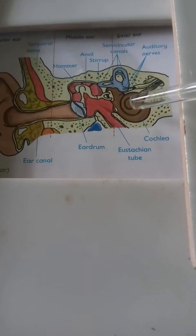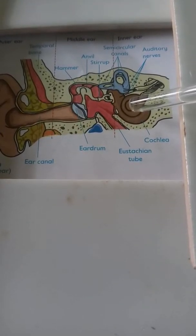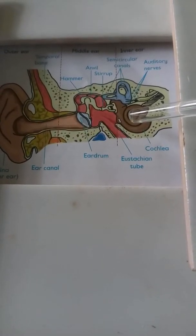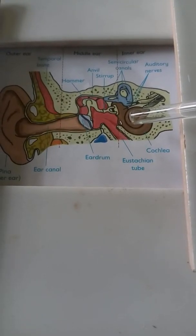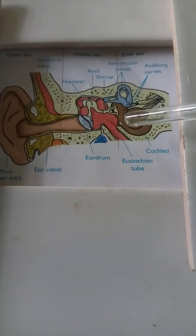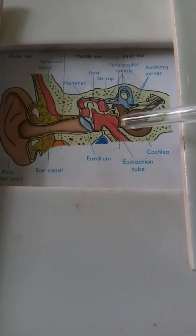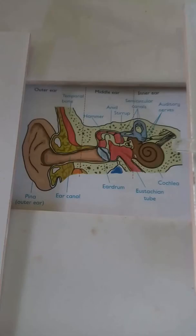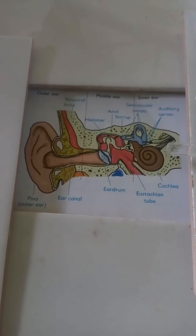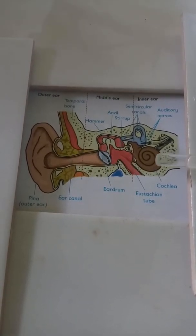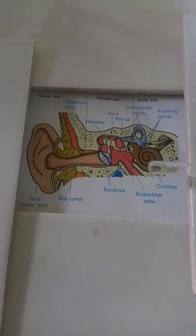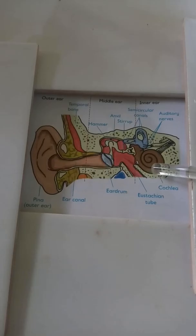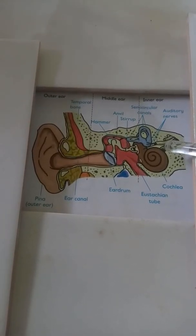Each hair cell has a natural sensitivity to a particular frequency of vibration. When the frequency of the compression wave matches the natural frequency of the nerve cell, it vibrates with a larger amplitude, which causes the cell to release an electrical impulse that passes along the auditory nerve to the brain.